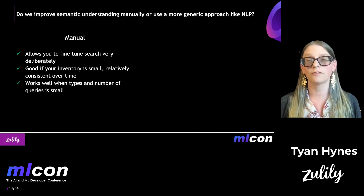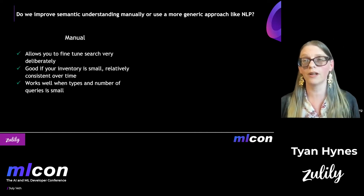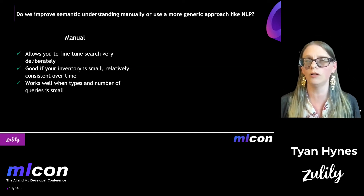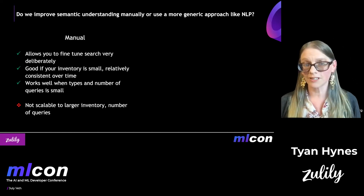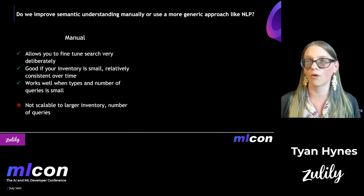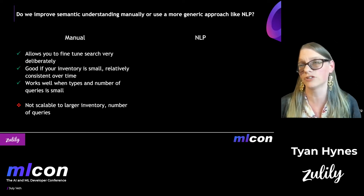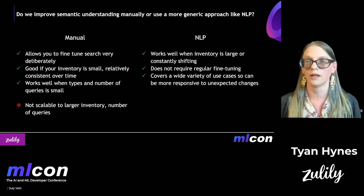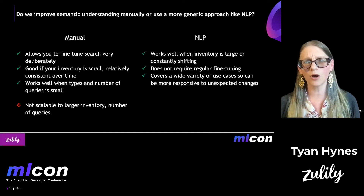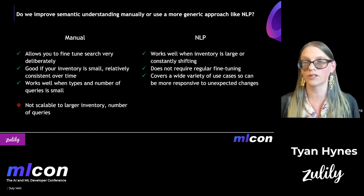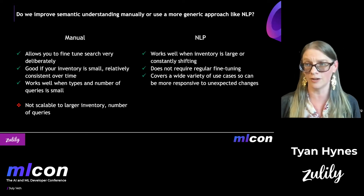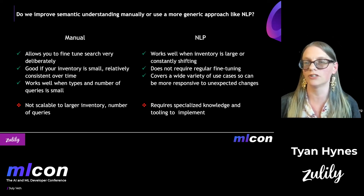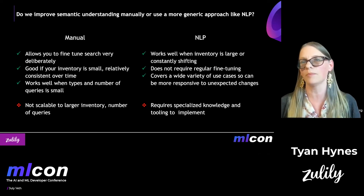Manual semantic tuning allows you to fine tune search very deliberately — for a particular query, you can specify exactly what results you want to show. This works really well if your inventory is small or relatively consistent over time, and when the type and number of queries themselves are very small. But this is not terribly scalable if you have a larger inventory or a larger number of queries. Natural language processing works really well when your inventory is large or constantly shifting — it doesn't always require regular fine tuning and can cover a wide variety of use cases. However, implementing NLP requires specialized knowledge and tooling, which can be a real challenge if you don't have those resources available.